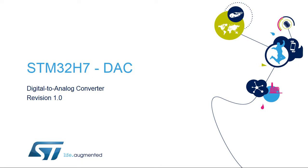Hello, and welcome to this presentation of the STM32H7 Digital-to-Analog Converter. This block is used to convert digital signals to analog voltages, which can interface with the external world.